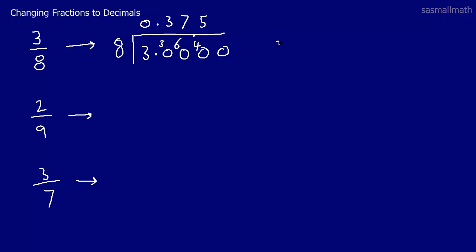So that's all that one done. So 3 8s is exactly the same as 0.375. Now we look at this one.